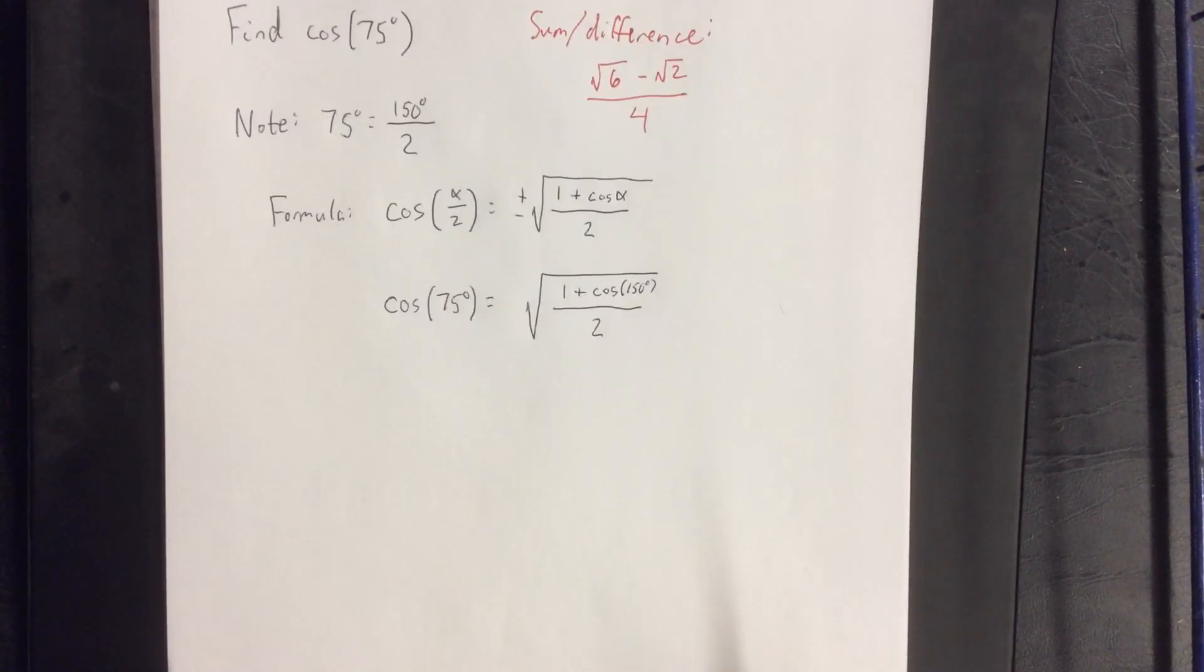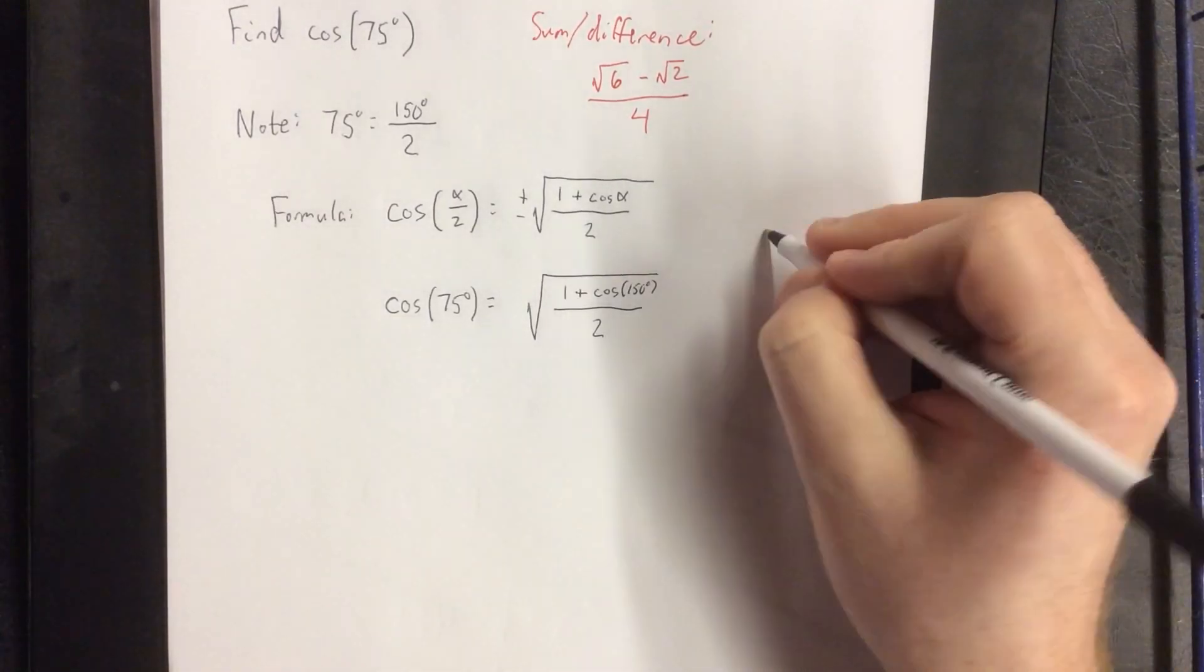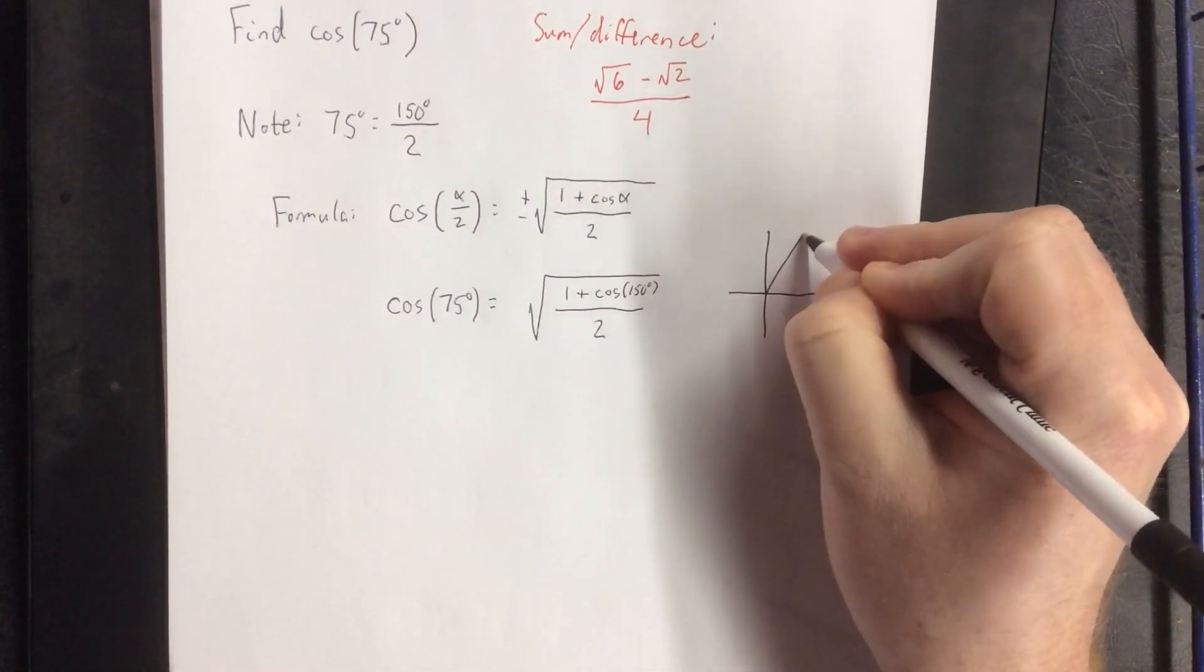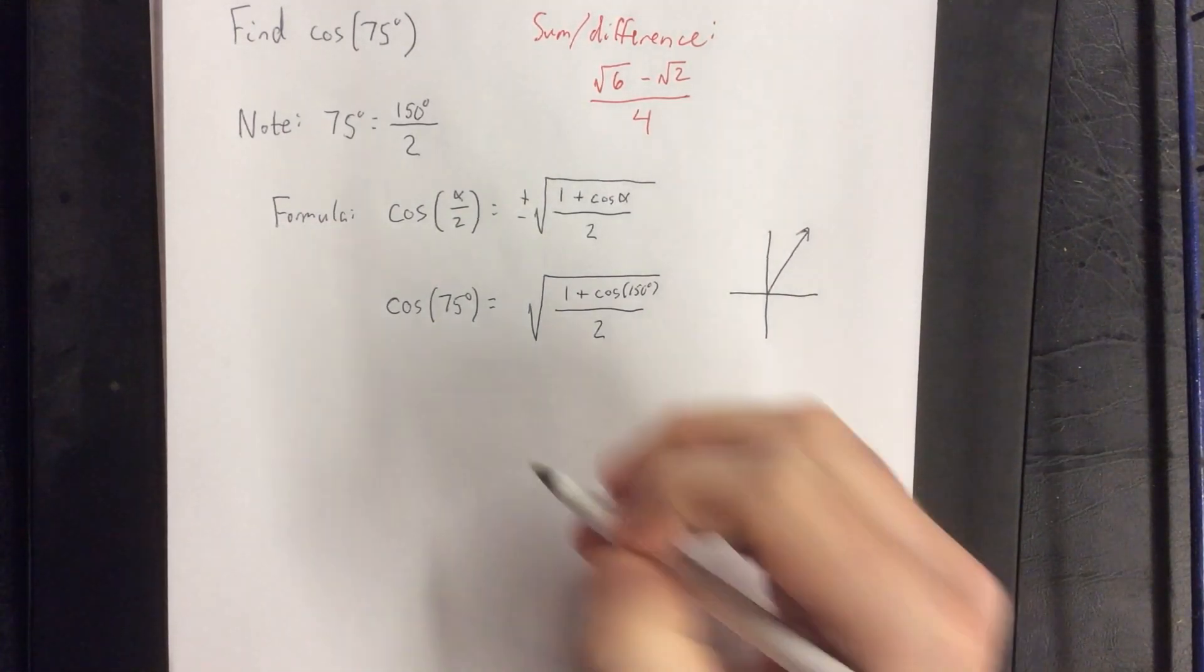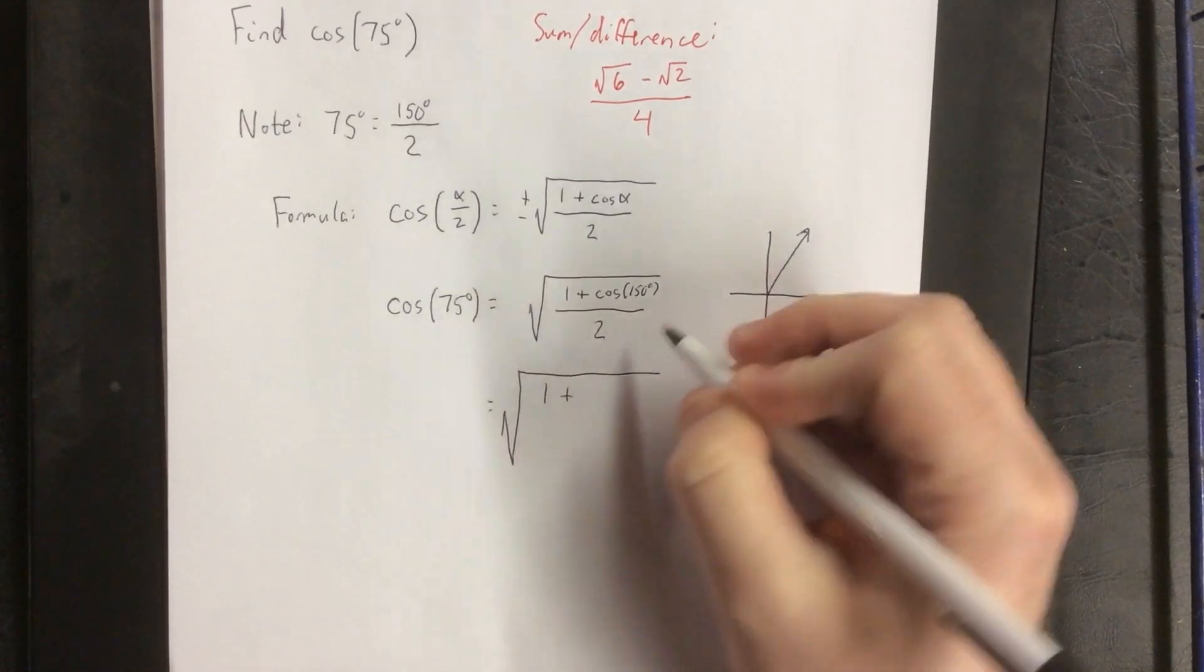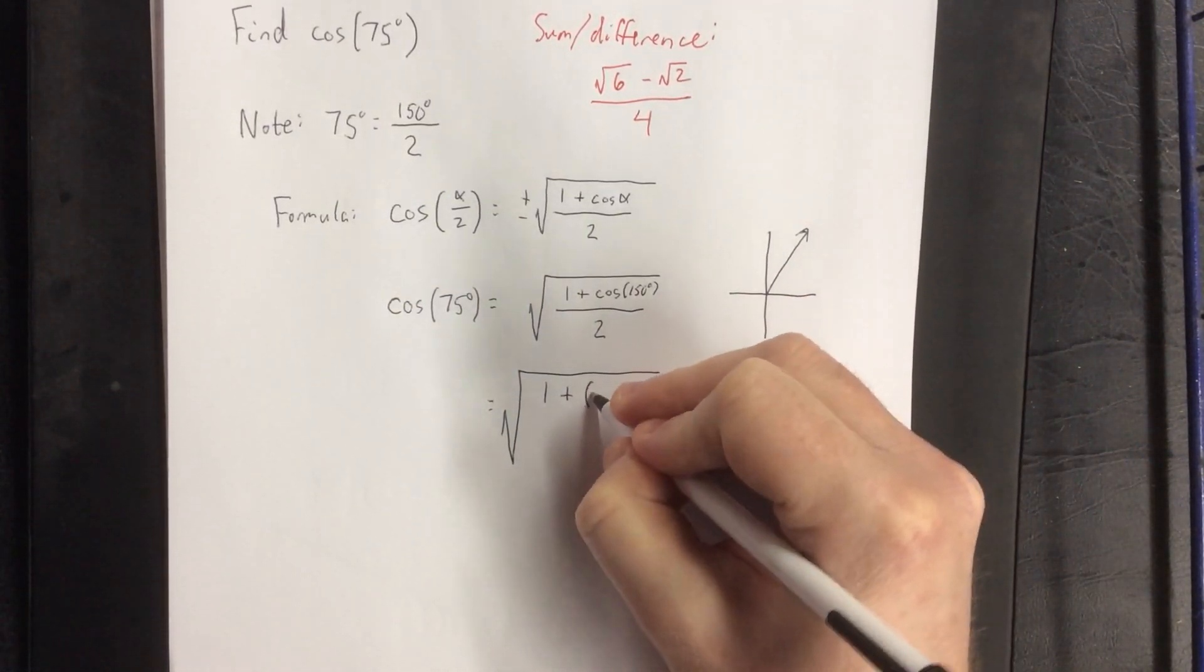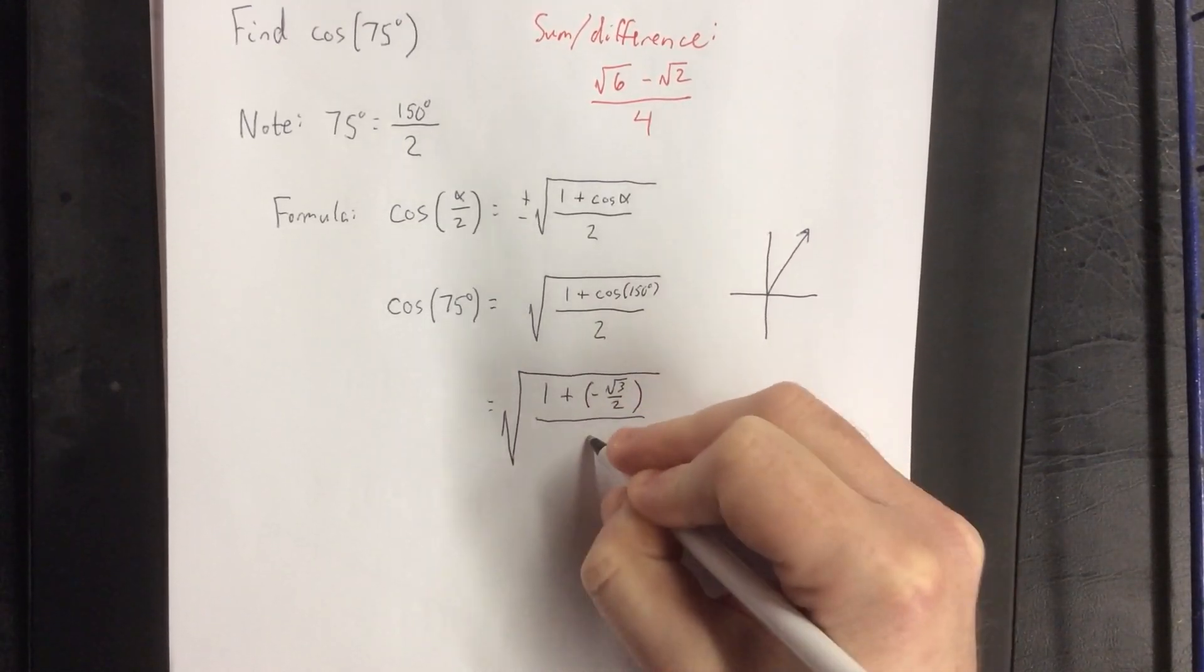Now with that in mind you'll notice that I didn't write the plus or minus anymore. This is because I know 75 degrees is a quadrant 1 angle and in quadrant 1 the cosine will be positive. Now to simplify this further, this will be 1 plus cosine of 150 degrees which comes from the unit circle. That'll be negative square root of 3 over 2. This is all still over 2.